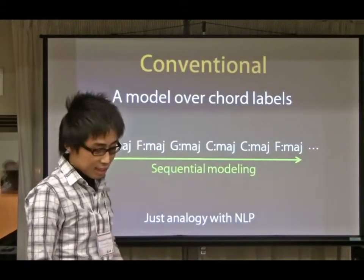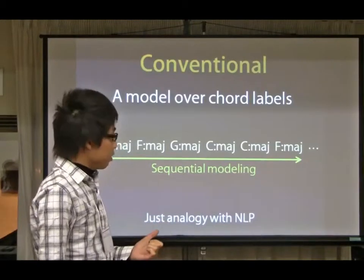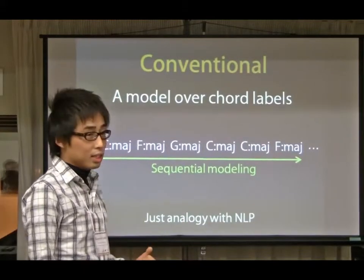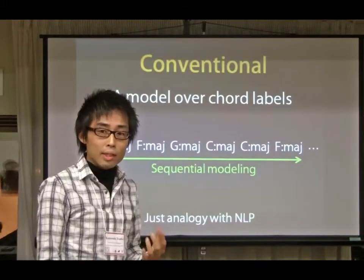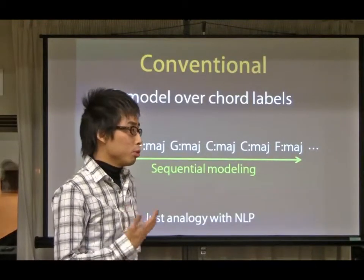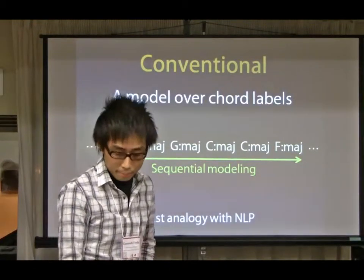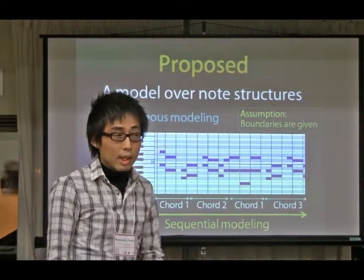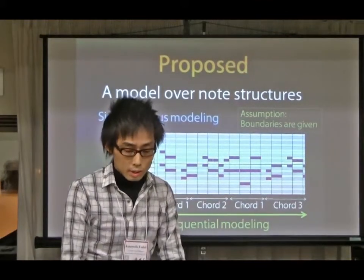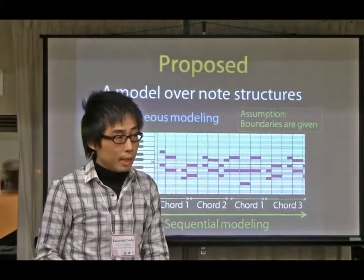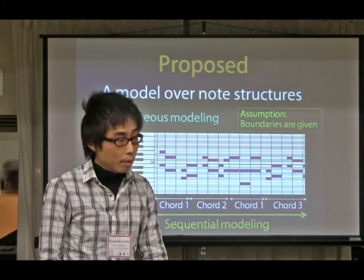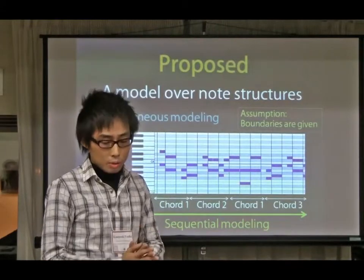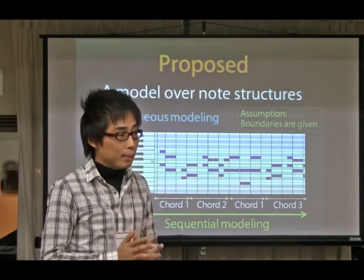In conventional studies, sequences of chord symbols have been treated with sequential modeling. This is analogized with natural language processing because chords are assumed to correspond to words in sentences. On the other hand, in this study, we propose a probabilistic model over note structures. This is a unified simultaneous and sequential model over two-dimensional note locations. Please note that we assume chord boundaries are given in advance.